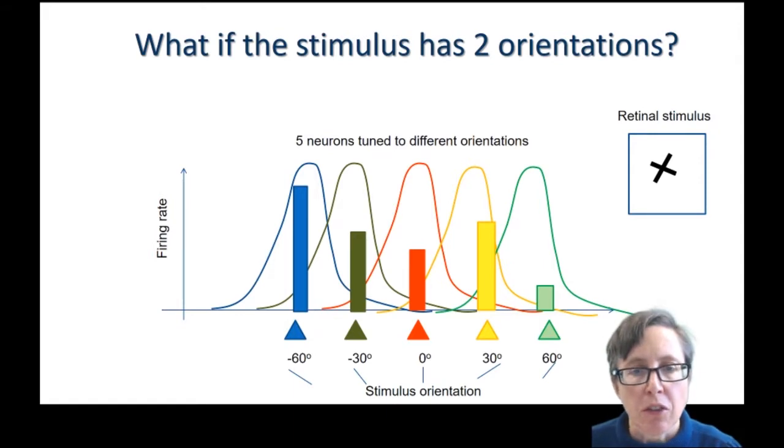What if the stimulus doesn't just have one orientation? What if there are two lines present at this particular point on the retina with different orientations? Well, again, this population can encode that. And this time we would have two peaks of activity. So for the example shown here, we have one bar that's tuned to around minus 60. So this blue neuron here is responding a lot. And then we have another bar that's tuned to about plus 30. So the yellow neuron is responding a lot. And so in that way, when you see a double peaked population activity like this, you can work out that there must be two different orientations present.